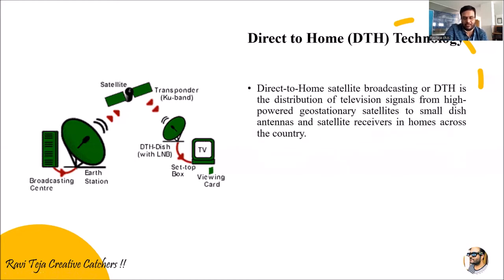Direct to Home satellite broadcasting is generally a distribution of television signals from high-power geostationary satellites. As we have already discussed, we have low earth orbital satellites, medium earth orbital satellites, as well as geostationary satellites. Especially for the DTH technology, we receive signals directly from the geostationary satellites to a small dish antenna.